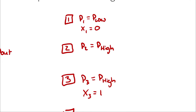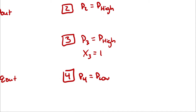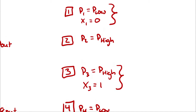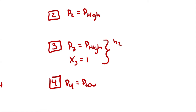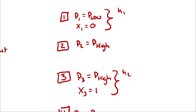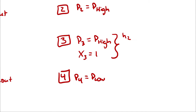So states 1 and 3 are now fully defined, from which I can look up whatever I want. What I will want to look up is eventually going to be enthalpy for my energy balances. But I will also want S1, because our compression and expansion processes are assumed to be isentropic unless given information otherwise. Therefore, S2 is equal to S1, and S4 is equal to S3.